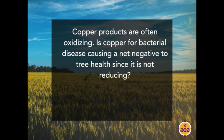Question from Kyle Rash: 'Copper products are often oxidizing. Is copper for bacterial disease causing a net negative to tree health since it is not reducing?' I'm not certain. Our experience and observation would be that while it produces a short-term positive and might prevent a short-term bacterial infection, it can actually predispose the tree or plant to further infections down the road. The best tool is to get copper as a nutrient into the leaf rather than using copper as a bactericide on the leaf surface. When you raise the nutrient levels of copper in the leaf, that will actually have as big or bigger an impact on disease resistance as the bacterial coating on the leaf surface — and you don't need to worry about it washing off, and it's a lot less expensive and more stable.